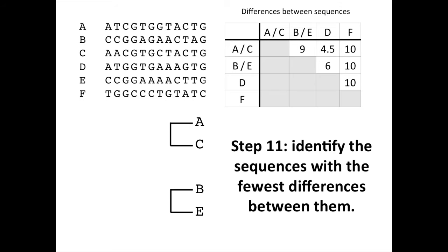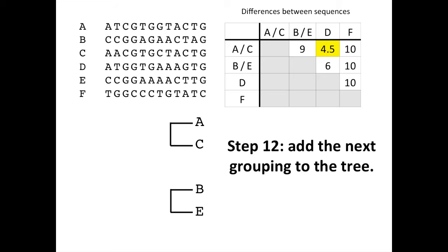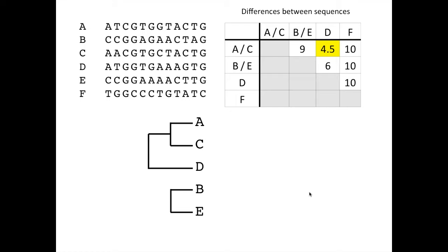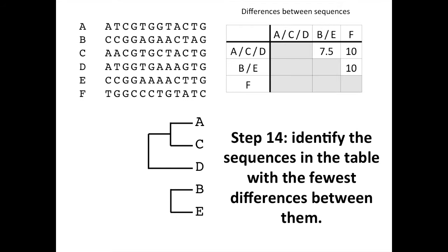With this table completed, we can now proceed to the next step, which is to identify the sequences with the fewest differences between them in our new table. We can see that the A-C group has only 4.5 differences to D, so this is the next close relationship in our tree. We can add this next grouping to our tree, with D as the next grouping out from A and C, reflecting the fact that D is more closely related to them than to the other sequences. With this new grouping added, we need to rework our table again with the A-C-D grouping incorporated. We have an average of 7.5 for A-C and D to the B-E group, and an average of 10 for A-C and D to F, and also ten differences between the B-E group and F. With the new table completed, we can determine the next relationship by identifying the sequences with the fewest differences between them again.